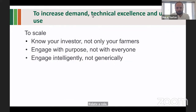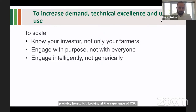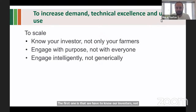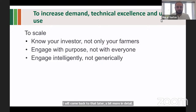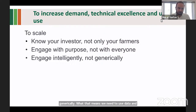To increase demand, technical excellence, and underlying use, what do we need to do? Looking at the experience of CGIAR and Excellence in Agronomy, there are patterns appearing. First, we have to know our investors, not only our farmers. Second, we need to engage with purpose — not with everyone. We must be selective about whom we partner and engage, and not take a blanket approach of partnering with everybody who's interested. Finally, we need to engage intelligently, not generically — using data and information to make those decisions.